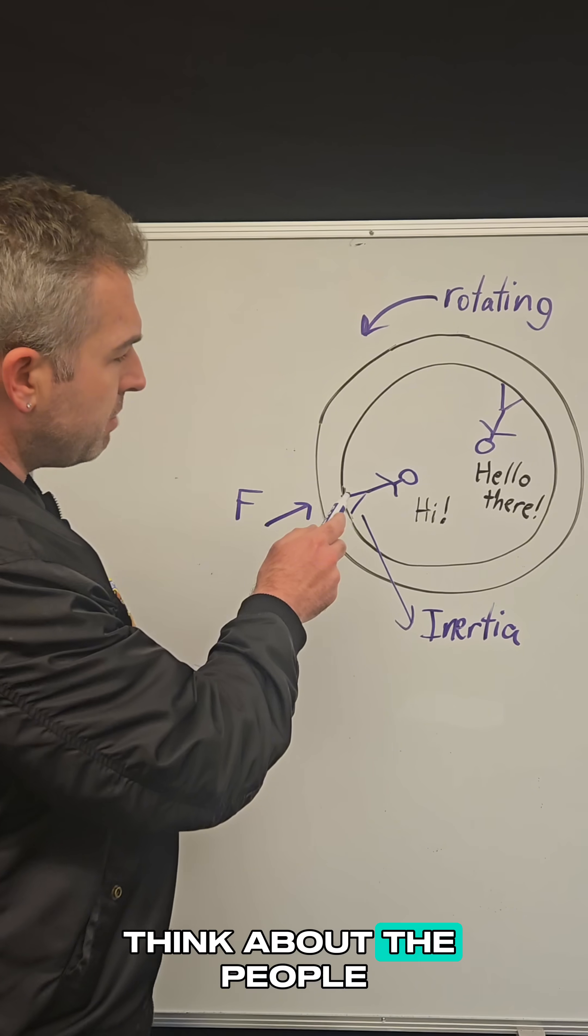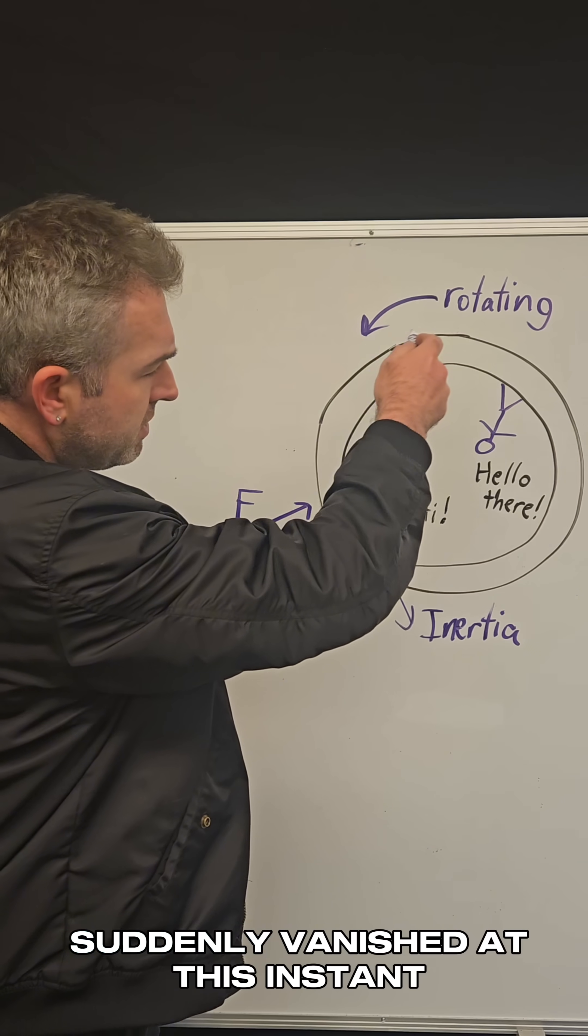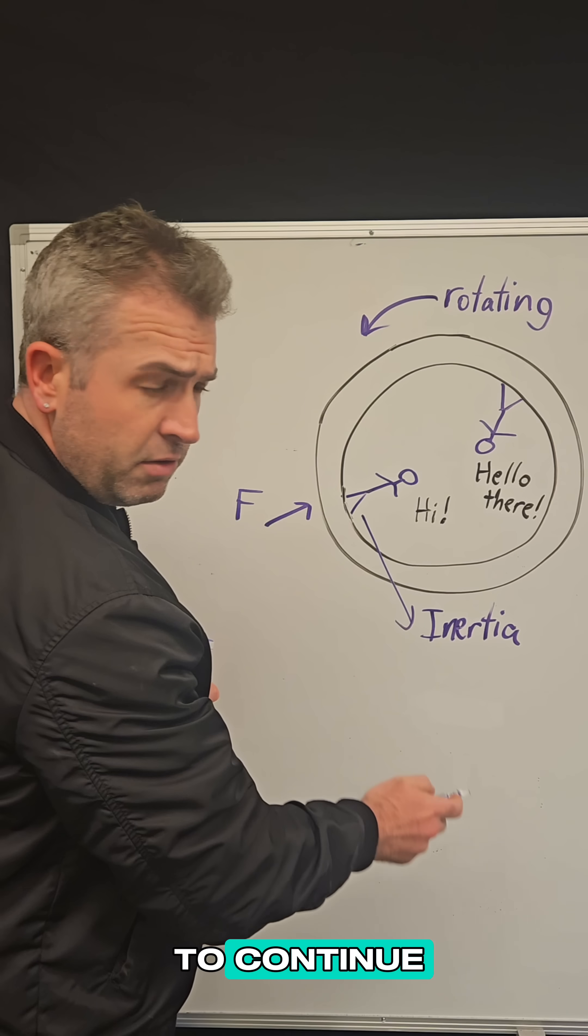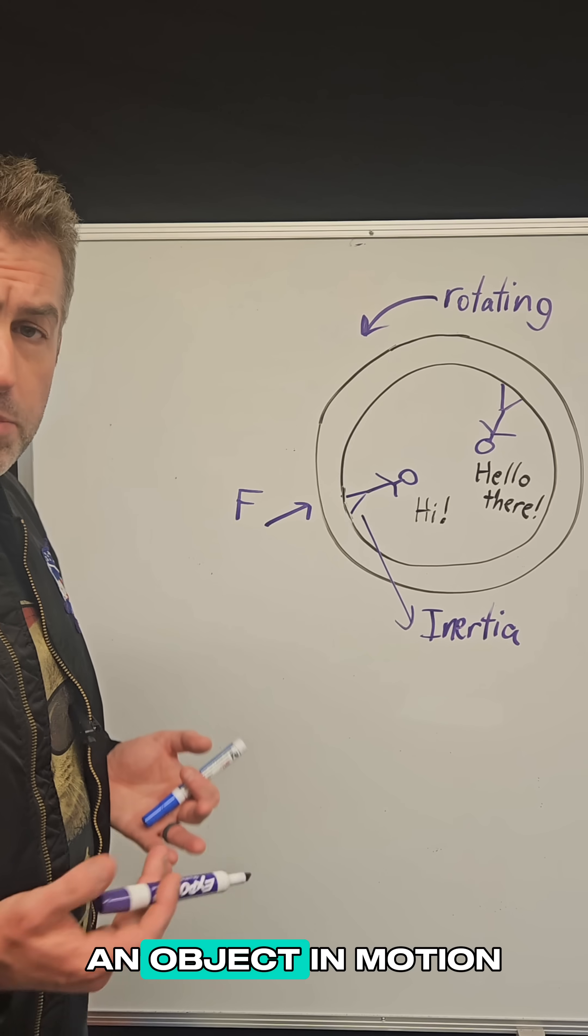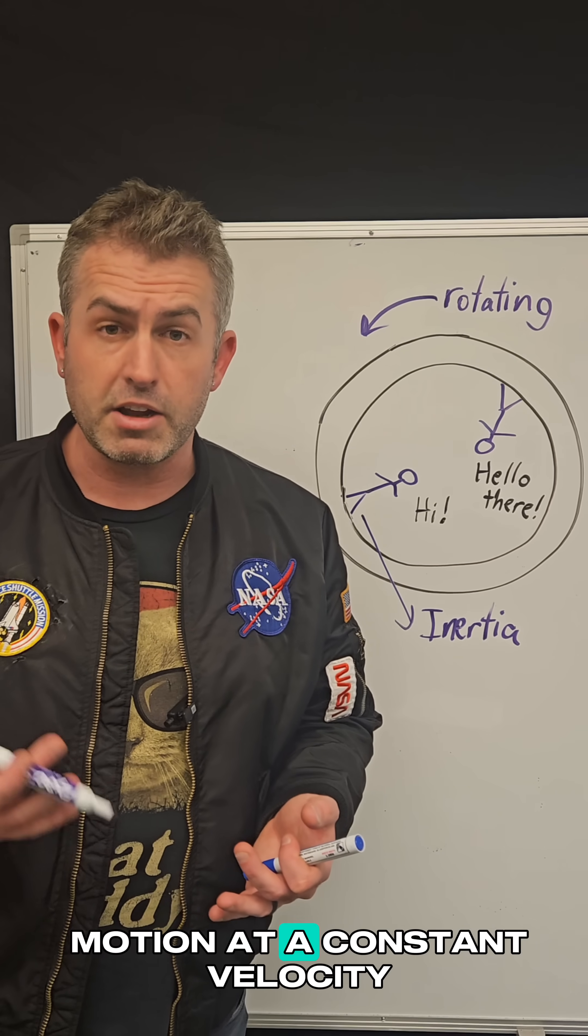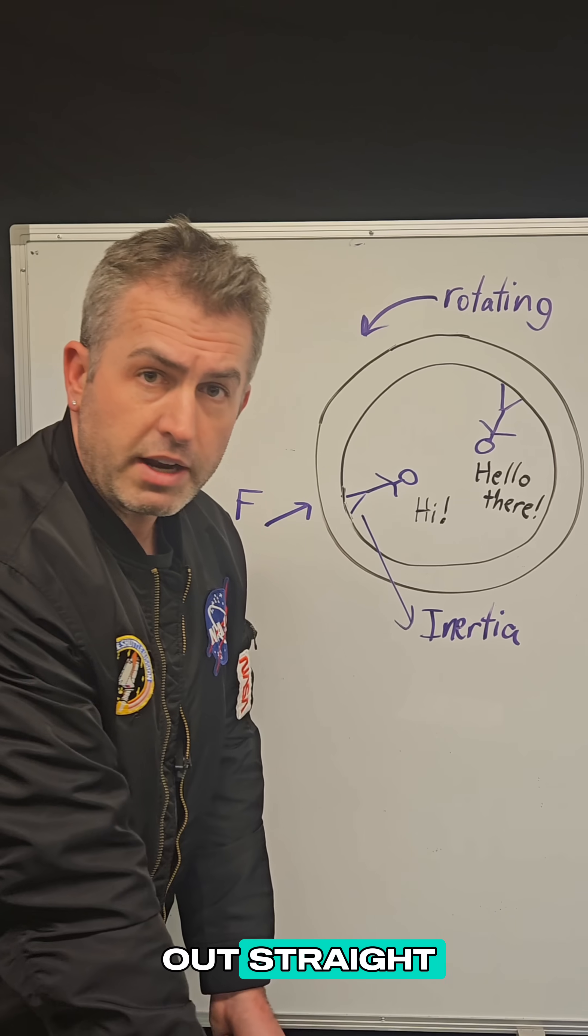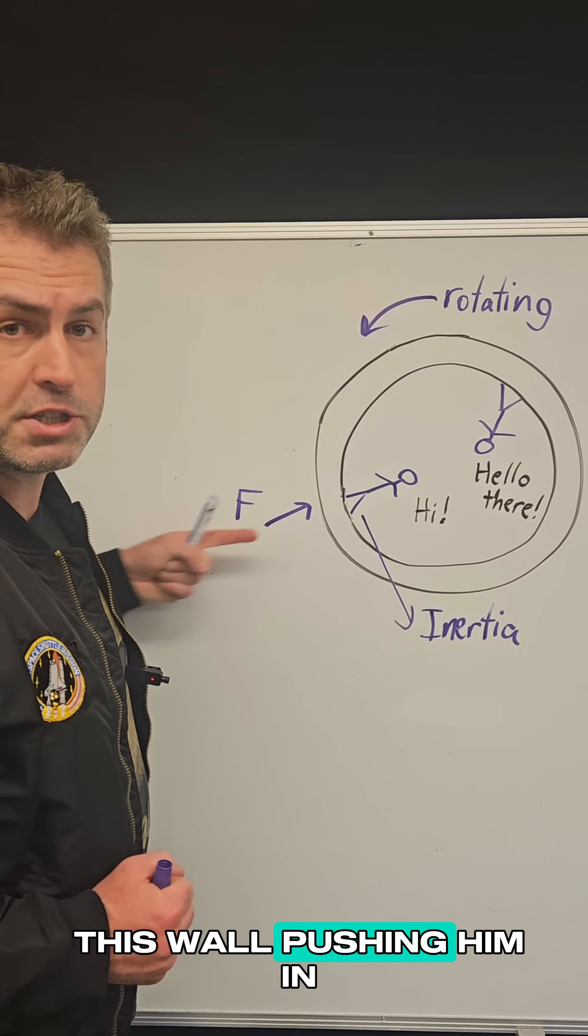Well, think about the people living inside of here. So they're spinning around and if the wall suddenly vanished, this person would want to continue moving in a straight line at a constant speed. And this is what we call inertia. An object in motion wants to stay in motion at a constant velocity. So if he was free to go, he would just shoot out straight. But what's stopping him from doing that? That's the force of this wall pushing him in.